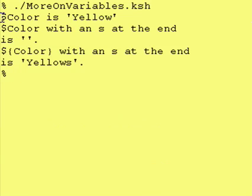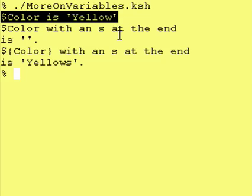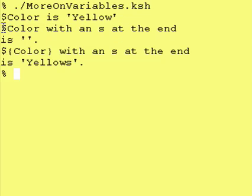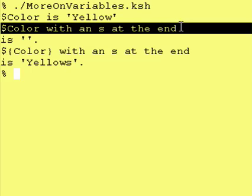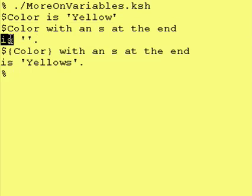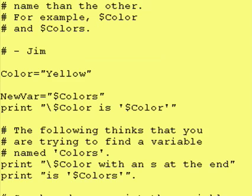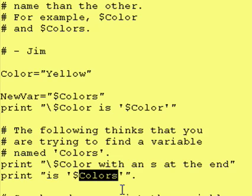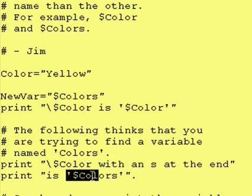Our very first print statement said color is, and it does come out to be yellow. Our second print statement said color with an s at the end is, and it comes out to be an empty string. It tried to find a variable called colors and substitute whatever was in colors right in here. However, because there was no variable called colors, nothing got put in.